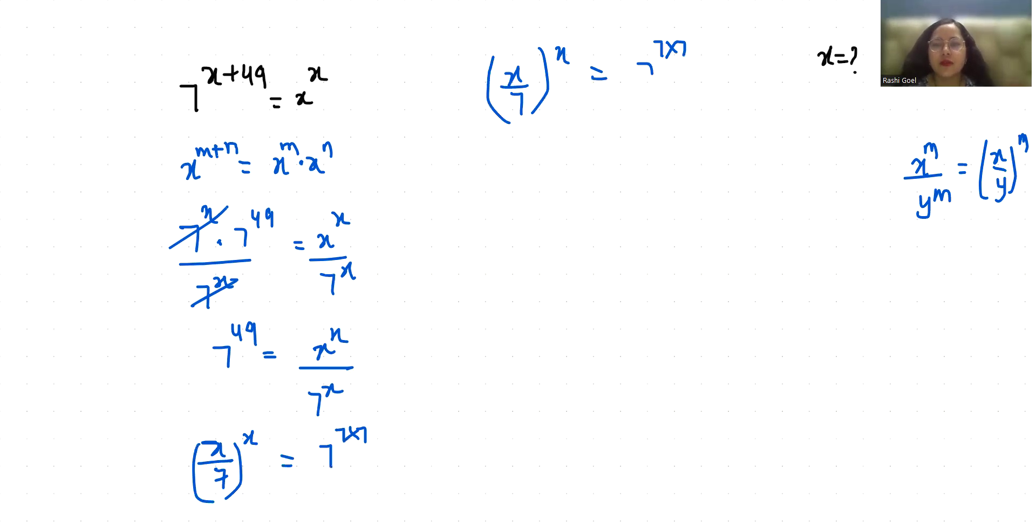So x by 7 power x equals 7 power 7 times 7. Now I am going to divide with 7 power 7 both sides, so x by 7 power x by 7 equals 7 power 7.